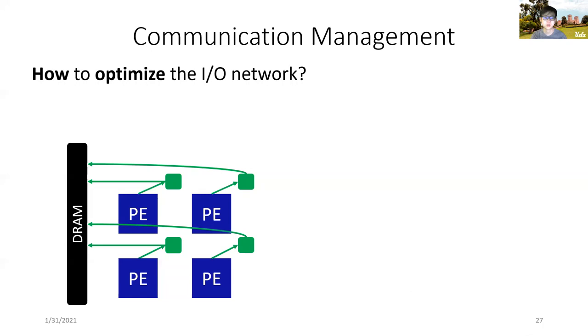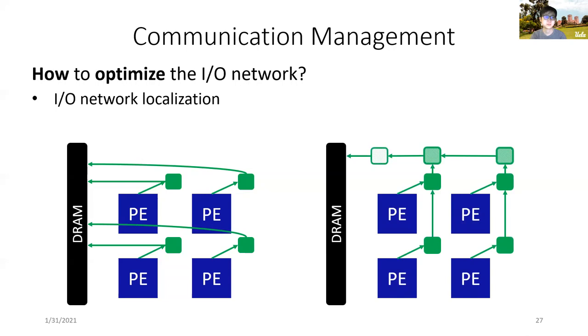To overcome this problem, we choose to localize the I/O network. By its name, we will allocate a series of I/O modules to pass data from each other. After this optimization, both the I/O network and PE arrays only contain local interconnects, which is one of the critical characteristics of the systolic array architecture.